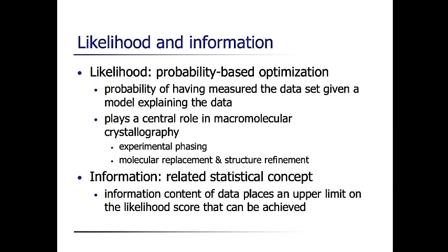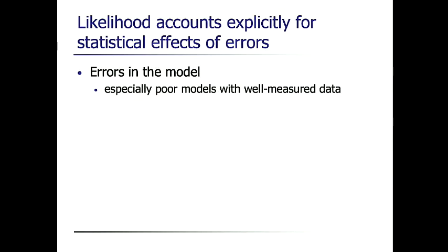Information is a statistical concept related to likelihood. What I'll hope to show you very briefly is that if you calculate the information content of a data set, that actually gives you an upper bound for the likelihood score you would be able to achieve with that data set if you had a perfect model. Likelihood gets its power from the fact that it accounts explicitly for the statistical effect of errors. In the old Patterson-based methods for molecular replacement, there was no way of accounting for errors, so you had all sorts of arbitrary things you had to do. Likelihood accounts for an important part — errors in the model, as Kaushik was saying.